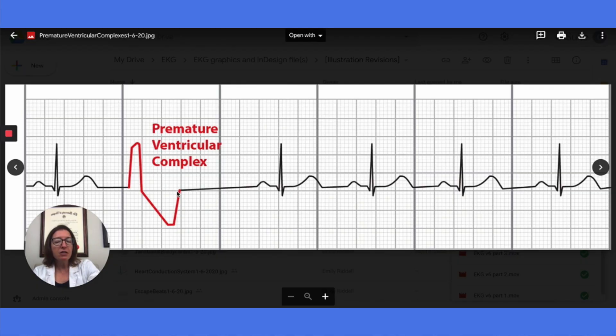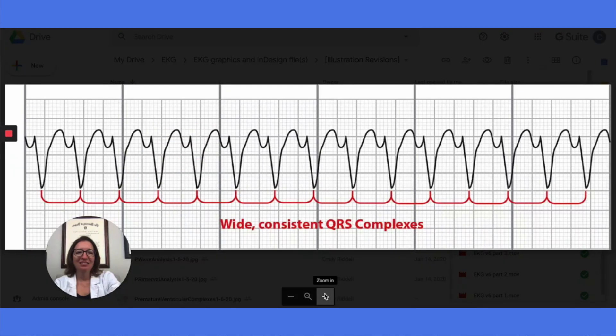PVCs are often asymptomatic and don't require treatment. However, antiarrhythmics can be used for patients who have symptomatic PVCs.